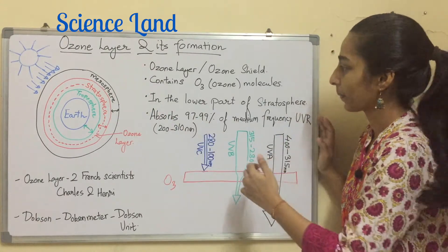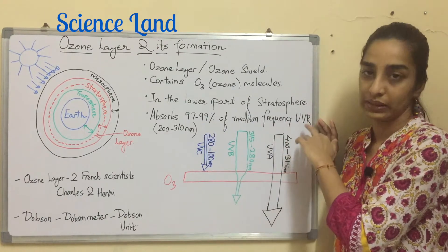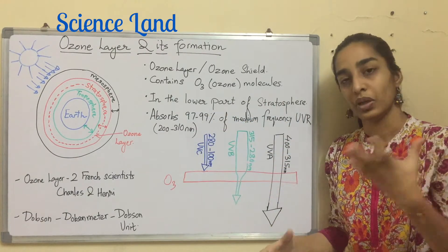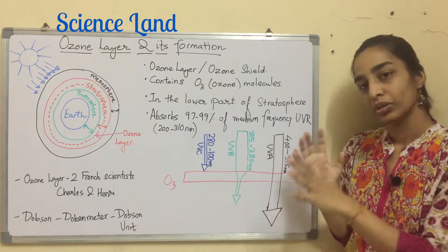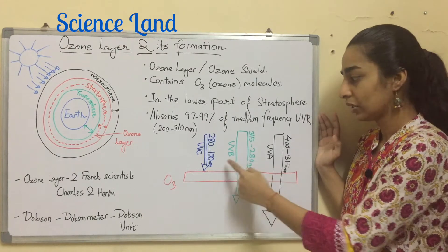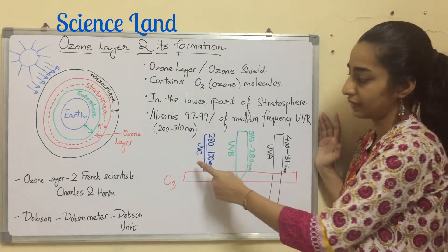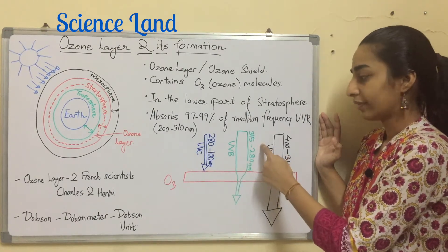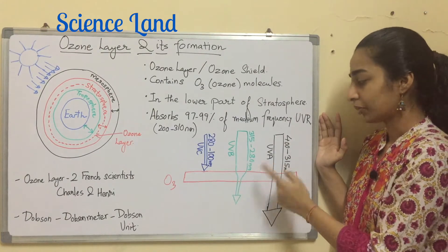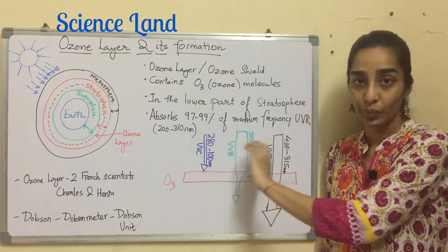Ozone layer absorbs 97 to 99 percent of the medium frequency UV radiation. So to understand that we need to know the basics of UV radiation. UV radiation is essentially divided into three types depending on the wavelength associated with it: UVA, UVB, UVC. 100 to 280 nanometer wavelength is UVC, 280 to 315 nanometer wavelength is UVB, 315 to 400 nanometer wavelength is UVA.